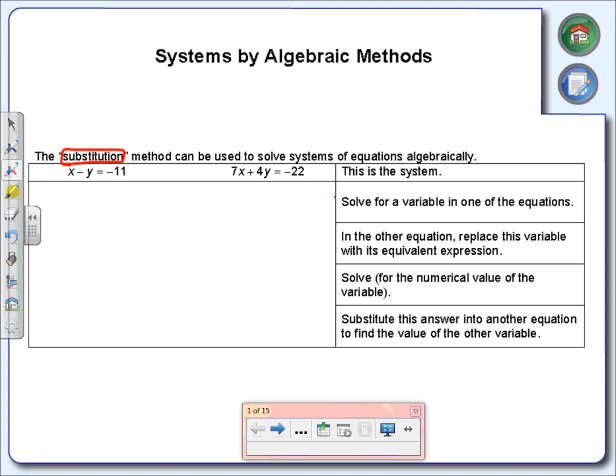The steps we're going to need for substitution are right over here: step one, step two, step three, step four. Those are the four things we need to do. Our first system is x minus y equals negative 11 and 7x plus 4y equals negative 22. I want to know what is the solution to that system.